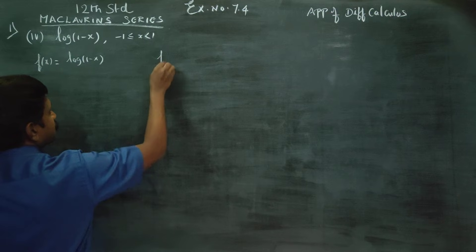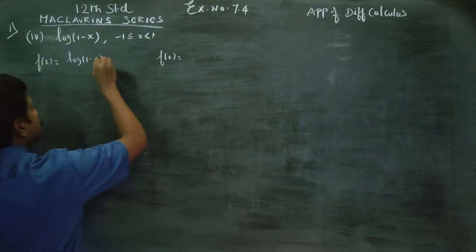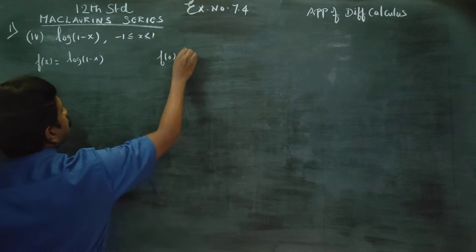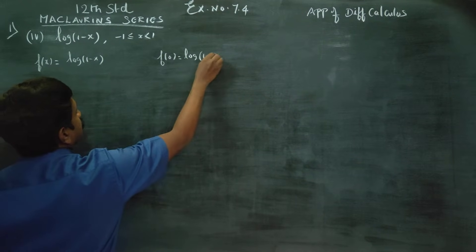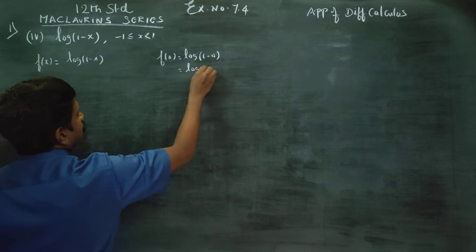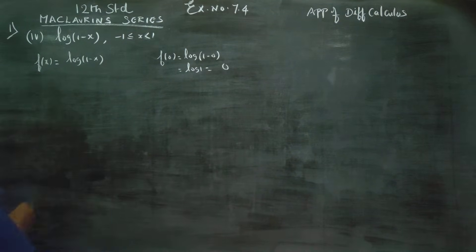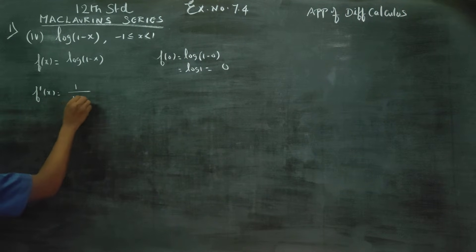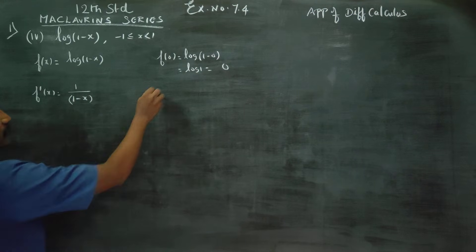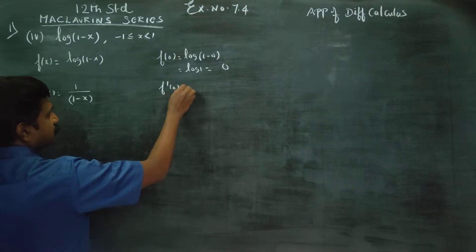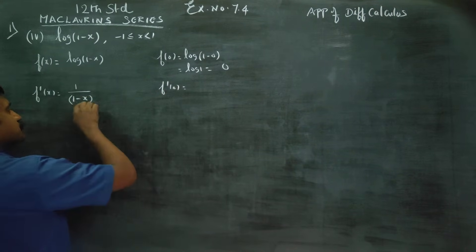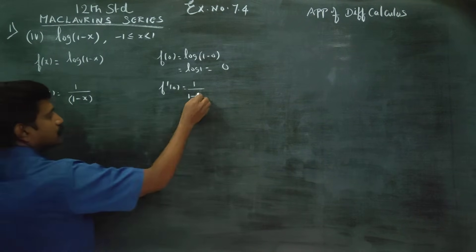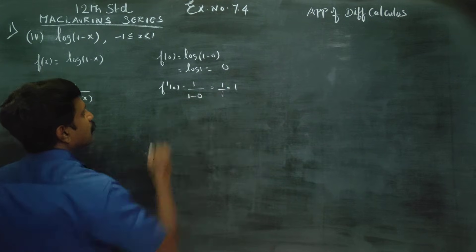First, f(0) is equal to log(1-0), which equals log(1), so f(0) is equal to 0. The values are valid. For f'(x), the derivative gives minus 1 over (1 minus x). When 1 minus x equals 1, then 1 by 1 gives your answer as 1.